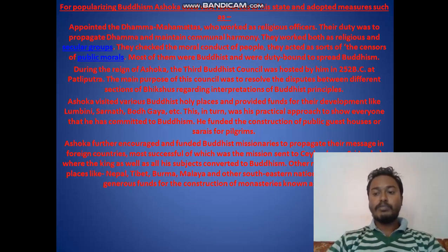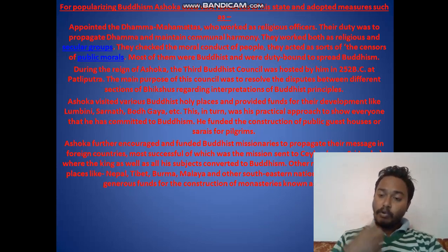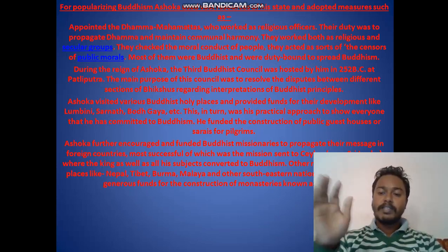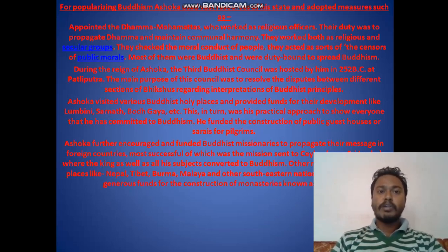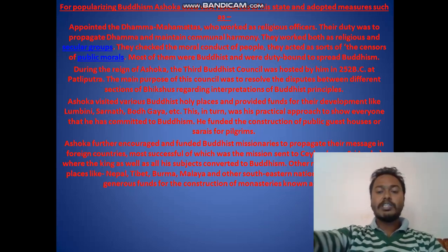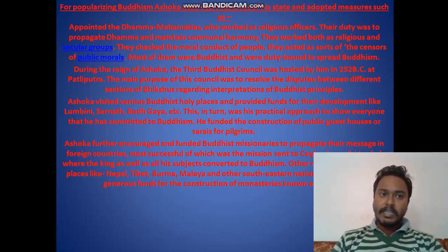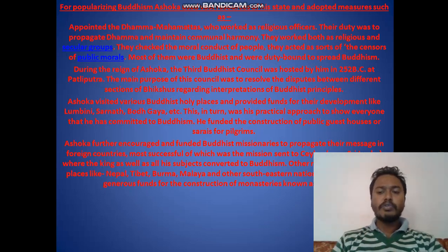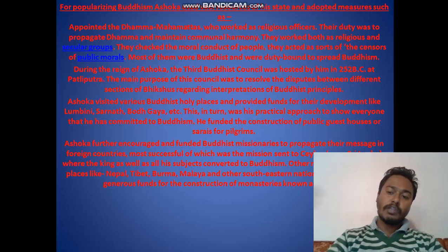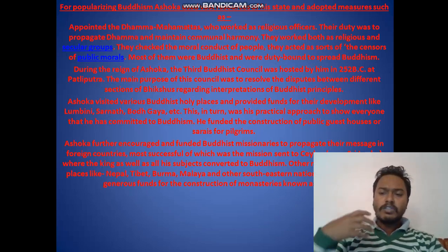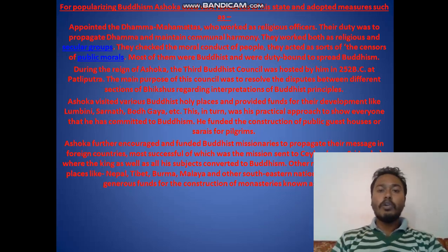To spread his Dhamma, Ashoka followed and preached Buddhism throughout his empire. He appointed special officials known as Dhamma Mahathas, whose role was to look after the principles of Dhamma, preach them to everyone, and bring communal harmony — both within his empire and in neighboring regions. They worked on both religious and secular grounds, checking the moral conduct of people and acting as censors of public morals. Dhamma was essentially a moral law: what you should and should not do, to love others.